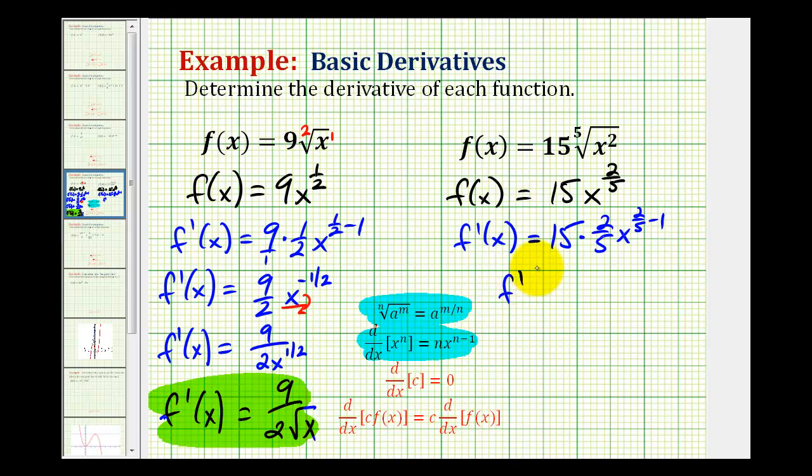And now we'll simplify. Here, when we multiply, there's a common factor of five. There's one-five and five, and three-fifths and fifteen. So this simplifies to six. X to the power of two-fifths minus one would be negative three-fifths.